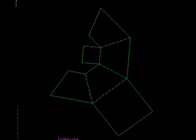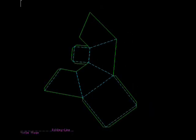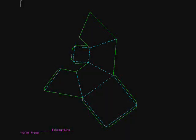Change internal lines to fold lines by changing the layers. Add your tabs for manufacturing purposes. And there you have it. How to create a development for a truncated pyramid.